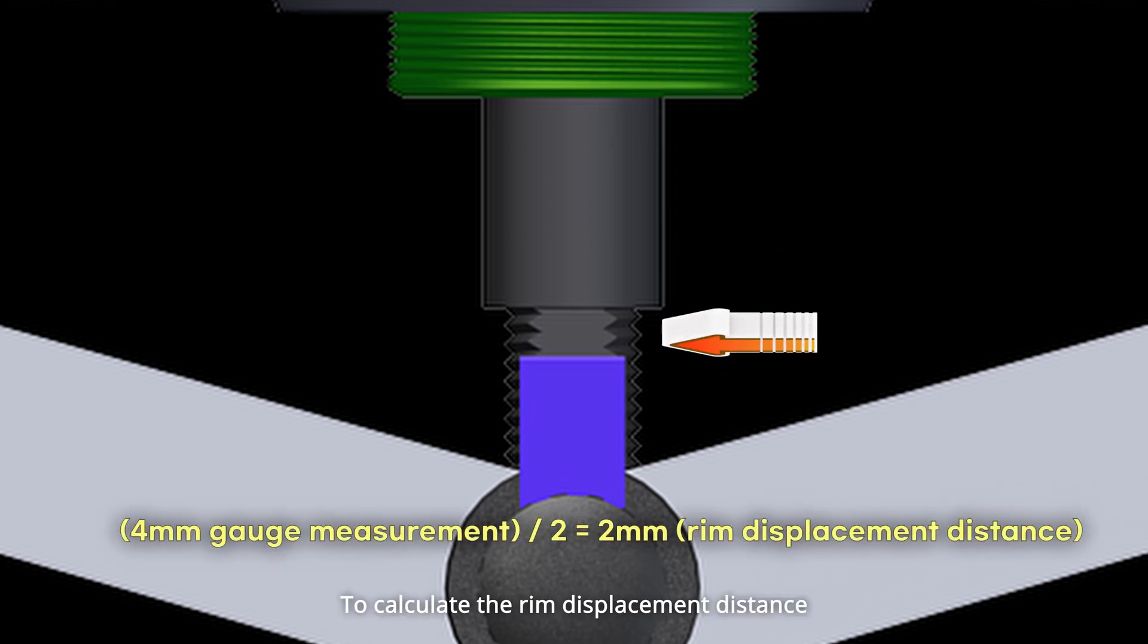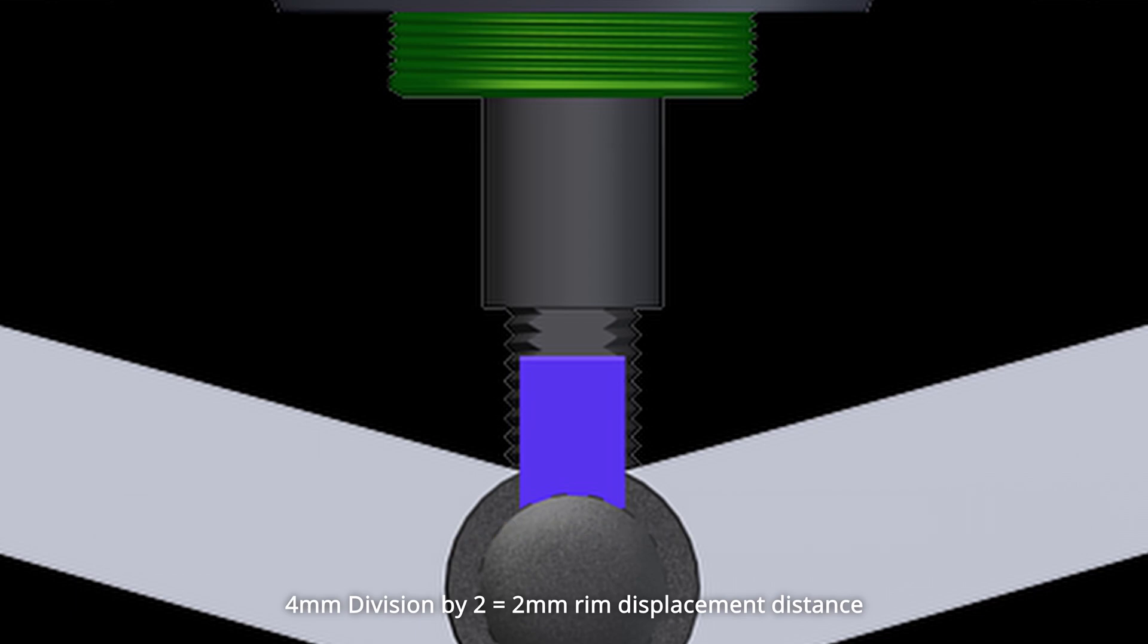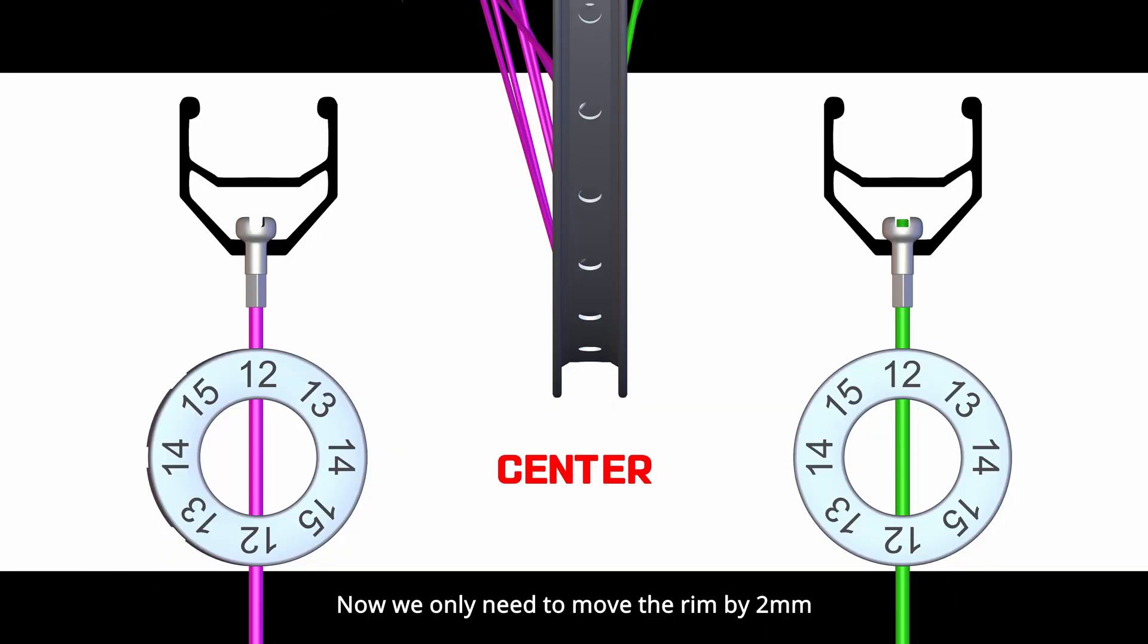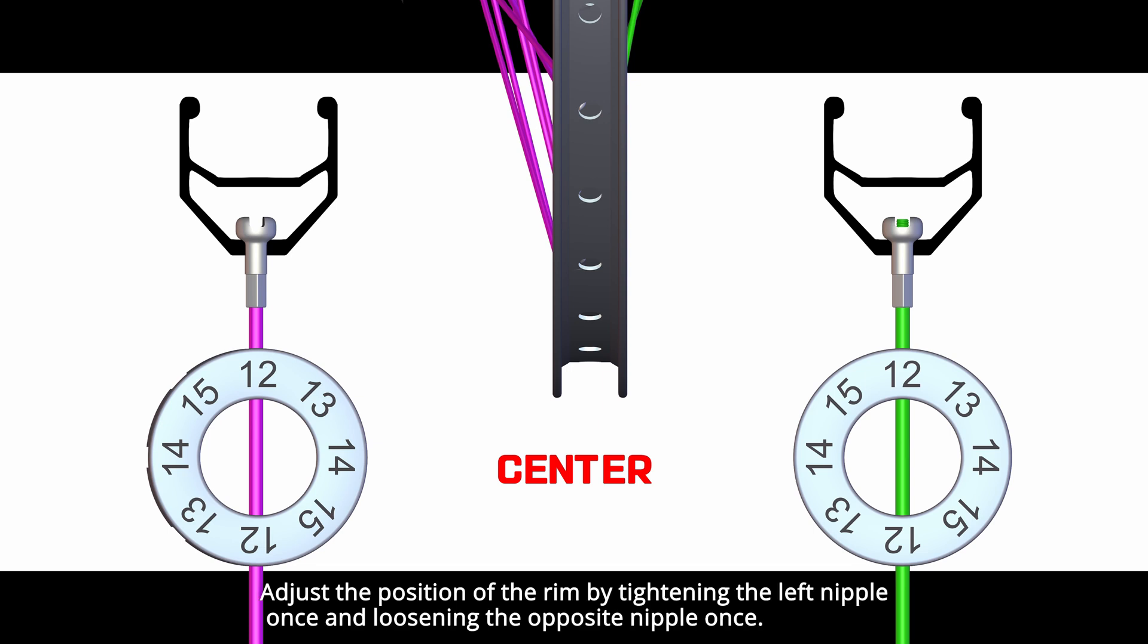To calculate the rim displacement distance, 4mm divided by 2 equals 2mm rim displacement distance. Now, we only need to move the rim by 2mm. Adjust the position of the rim by tightening the left nipple once and loosening the opposite nipple once. This will allow the rim to move without changing the tension of the spokes.